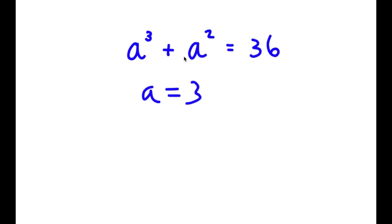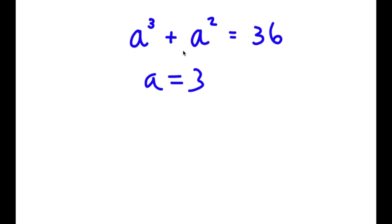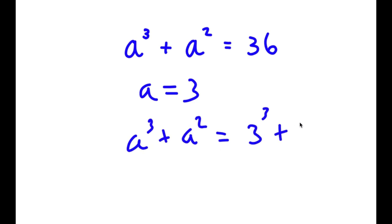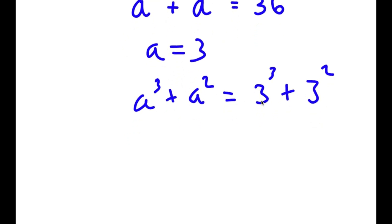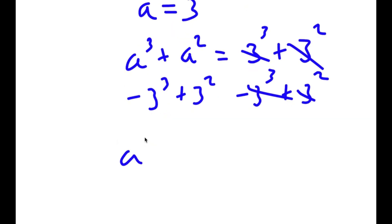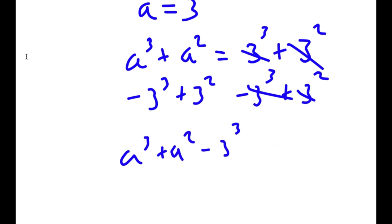Now that we found one solution, we can use it. I'm going to make a to the power of 3 plus a squared equal to 3 to the power of 3 plus 3 squared, because we know a equals 3. Then I'll subtract 3 to the power of 3 plus 3 squared from both sides, so these cancel out. I get a to the power of 3 plus a squared minus 3 to the power of 3 minus 3 squared is equal to 0.